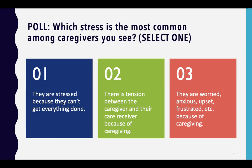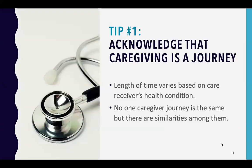We're beginning to see results. As one would expect, you're seeing caregivers with a variety of different things. It seems the most prevalent right now is caregivers who are worried, anxious, upset, frustrated, etc., because of caregiving. We'll come back to that later. Feel free to continue voting, but let's move on.